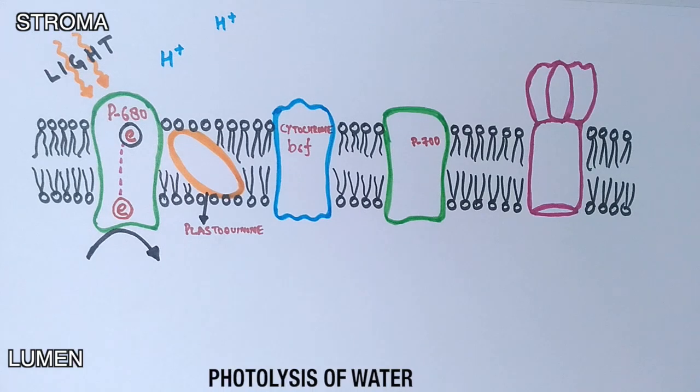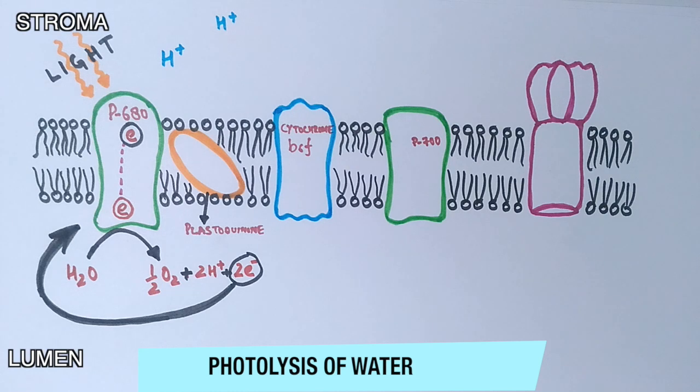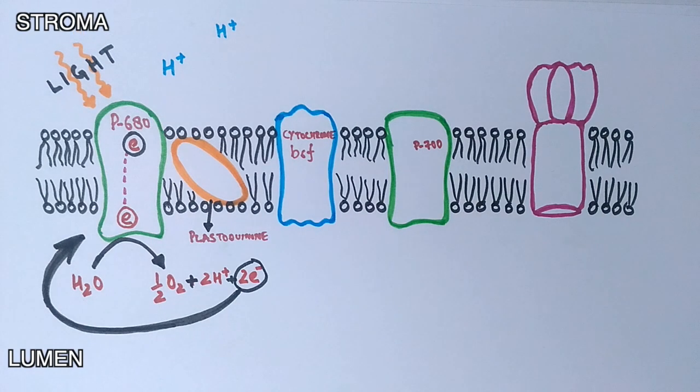The light energy also drives the photolysis of water into oxygen, electrons, and protons. The oxygen is evolved through the oxygen-evolving complex. The electrons from the photolysis of water stabilize the photosystem 2 molecule by compensating for the lost electrons.